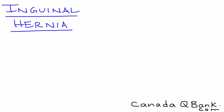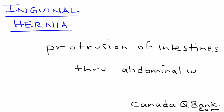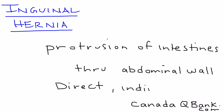Inguinal hernia is the protrusion of the intestine through the abdominal wall. This can be very troublesome if it becomes strangulated or incarcerated. Initially it can just present as a bulge, but it can eventually get stuck and the blood supply can be cut off. There are two types: direct inguinal hernia and indirect inguinal hernia.